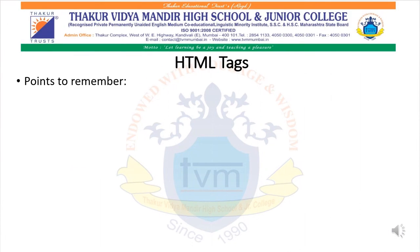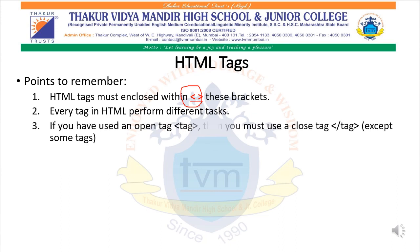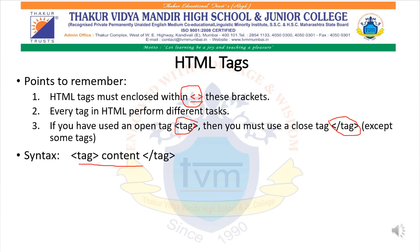Here are some points to remember. First, an HTML tag must be enclosed within open and close angle brackets — as you can see, the colored text represents the angle brackets. Second, every tag in HTML performs a different task. Third, each tag has an open tag and also a close tag, except for some. The syntax is: open tag, content, close tag.